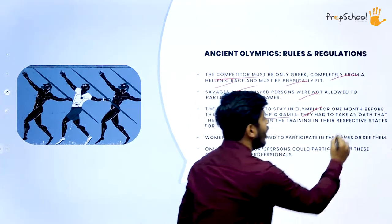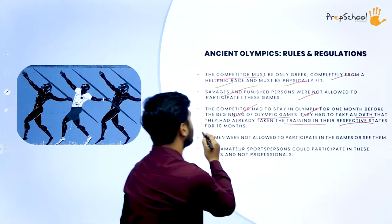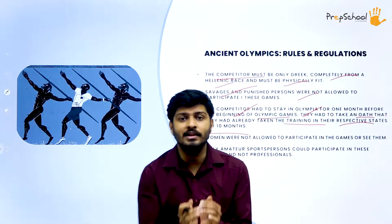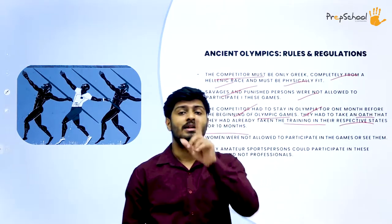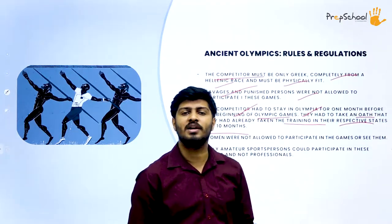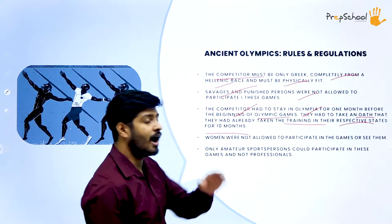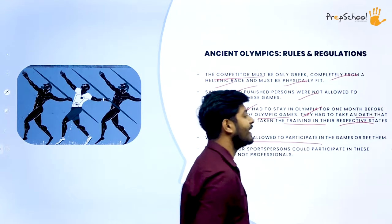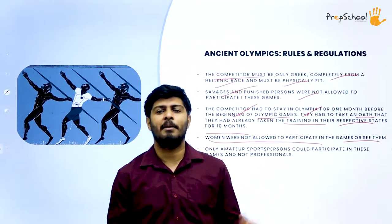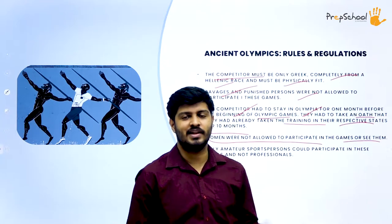Rule number three: the competitors had to stay in the village of Olympia for one month before the beginning of the Olympic Games. They also had to take an oath that they had already taken training in their own respective states for about 10 months. So before the event, one month they had to be in the village of Olympia, and they must also swear that they trained for 10 months in their respective villages before coming to Olympia. The next rule was that women were not allowed to participate in the games or even see them — quite a strange rule, but it was part of history.